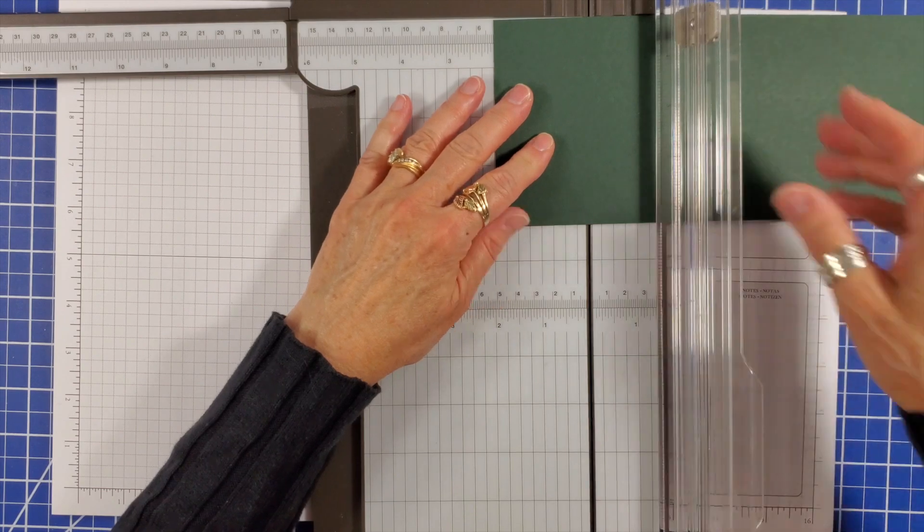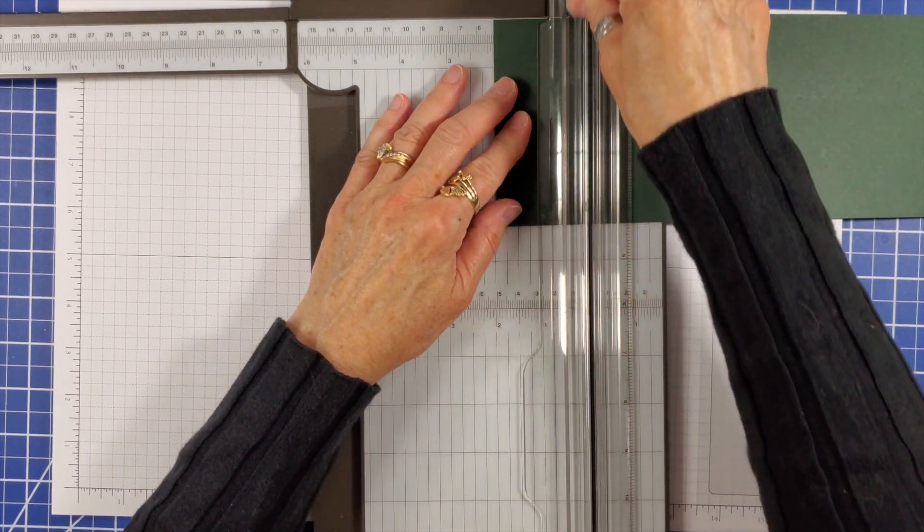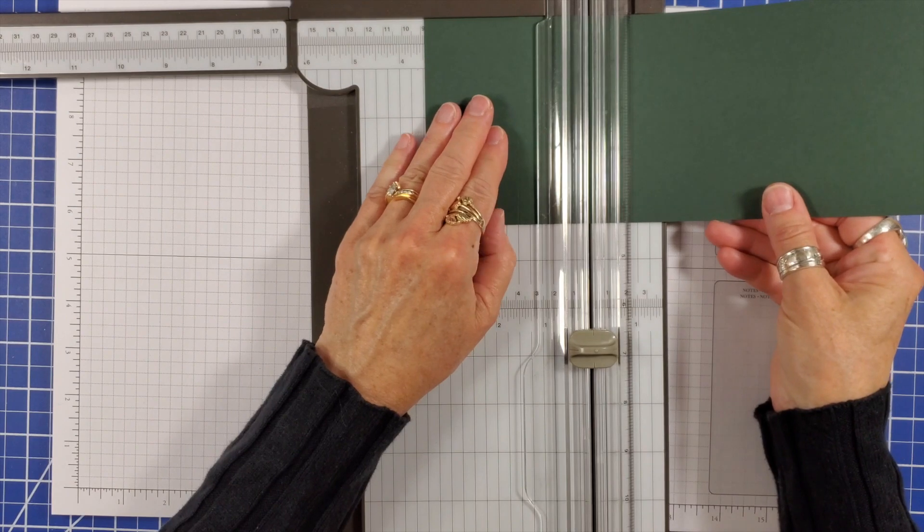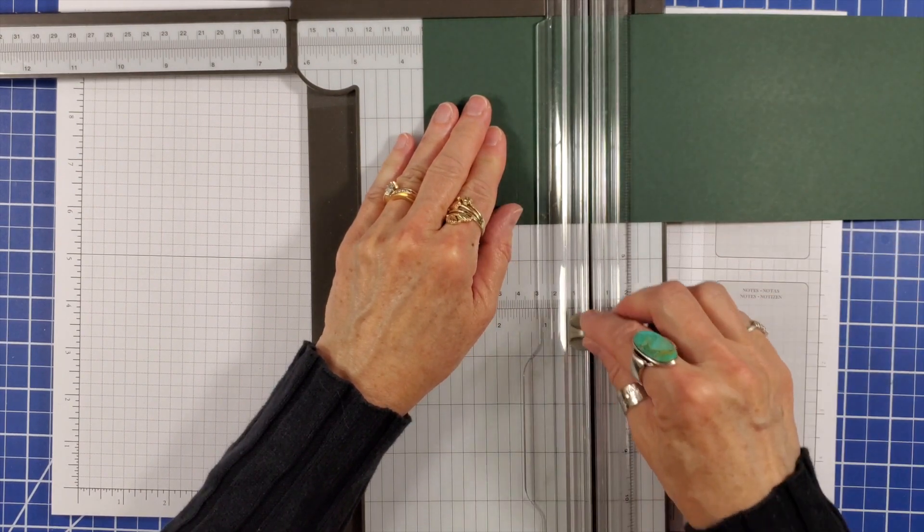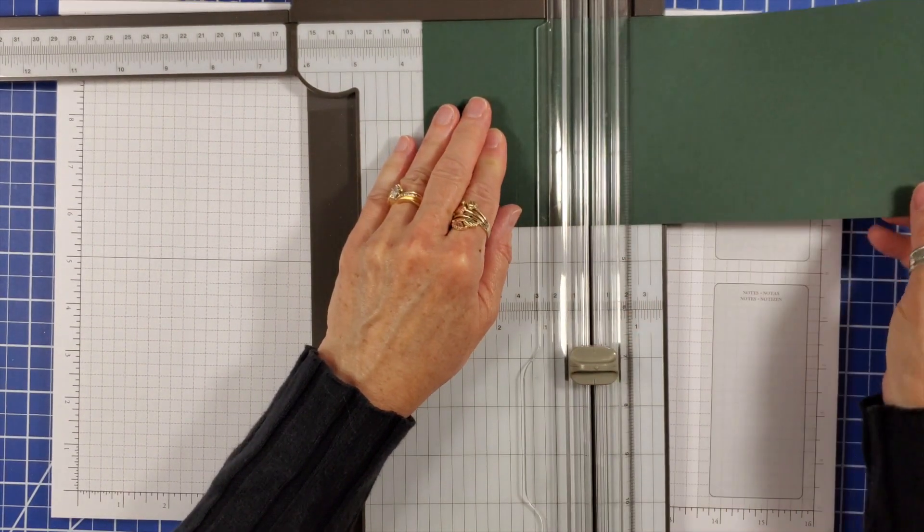Start with a piece of card measuring four and one quarter inches by 11 inches and score the long side at two inches, three and a half inches, and then at nine inches.